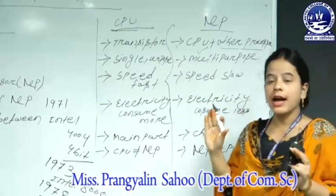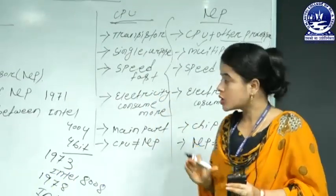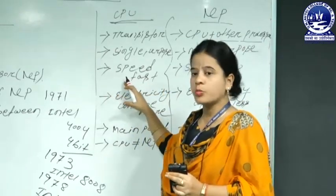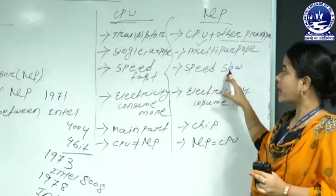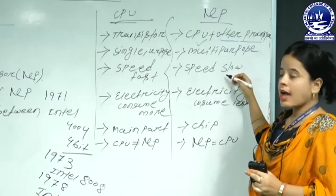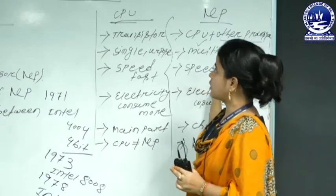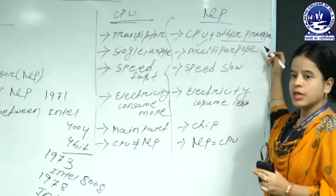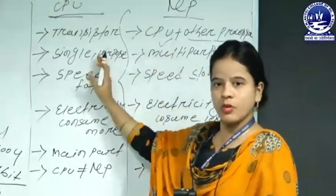Third difference: in case of the processor, since it executes only single-purpose arithmetical and logical manipulations, the CPU job execution is very fast — meaning the CPU throughput is very high. But in case of the microprocessor, the throughput is very less. Why? Because the microprocessor executes different types of data — both CPU functions and other processor jobs — so the CPU throughput is less compared to the processor.